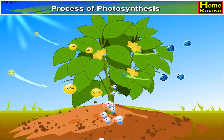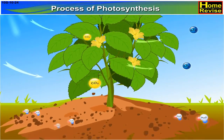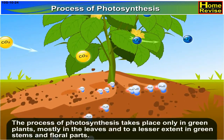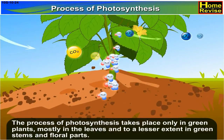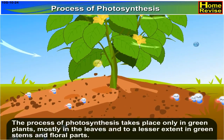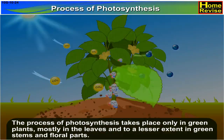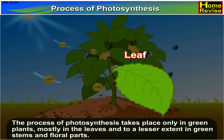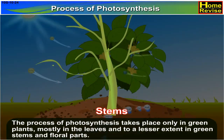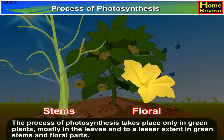The process of photosynthesis takes place only in green plants, mostly in the leaves and to a lesser extent in green stems and floral parts.